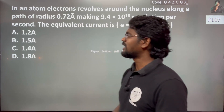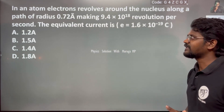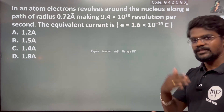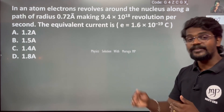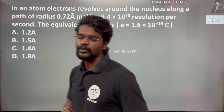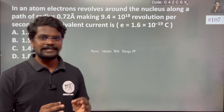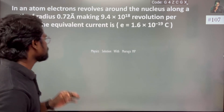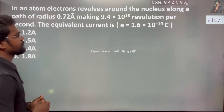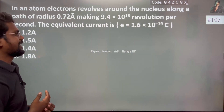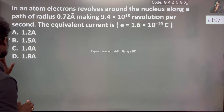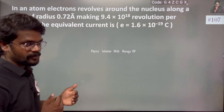In an atom, an electron revolves around the nucleus along a path of radius 0.72 Angstrom — one Angstrom being 10 to the power minus 10 meters. The electron makes 9.4 × 10¹⁸ revolutions per second, which is the number of cycles per second, i.e., the frequency.